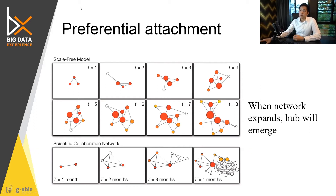So in preferential attachment, it postulates that when the network expands, the hub will emerge.